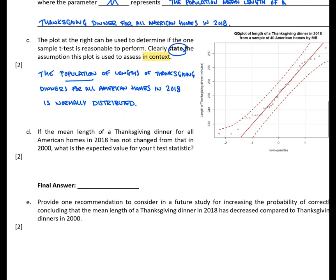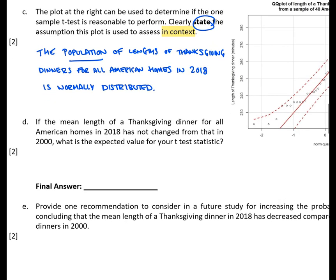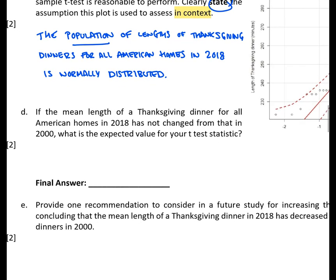Okay, moving on to question D. If the mean length of a Thanksgiving dinner for all American homes in 2018 has not changed from that in 2000, what is the expected value for your test statistic? So let's kind of break down what they're trying to say here. If the mean Thanksgiving dinner length in 2018 has not changed. So really what they're saying with this entire statement here is they're saying μ is still equal to 257. So they're saying if the null is true. So if H₀ is true, what is the expected value for our t-test statistic?